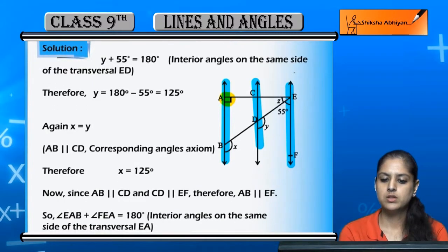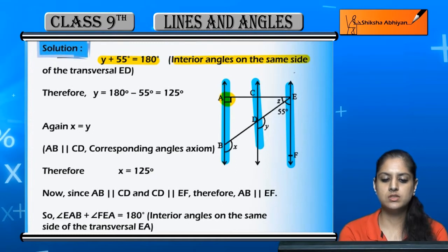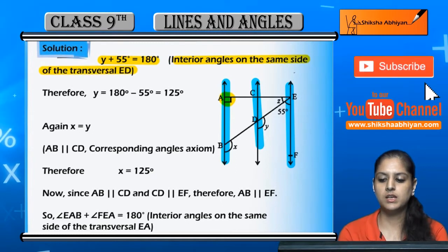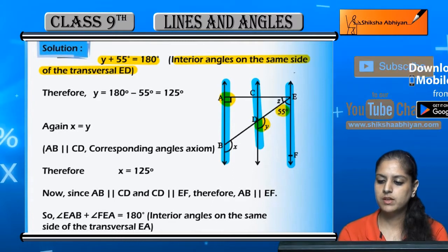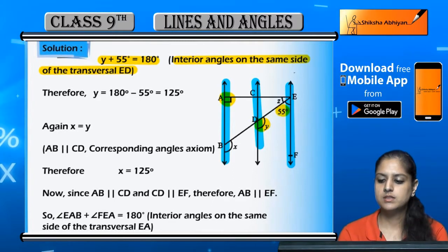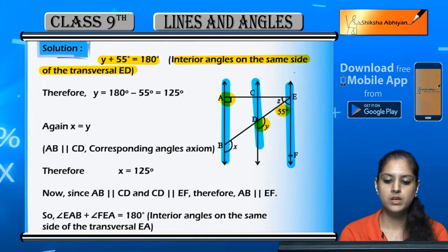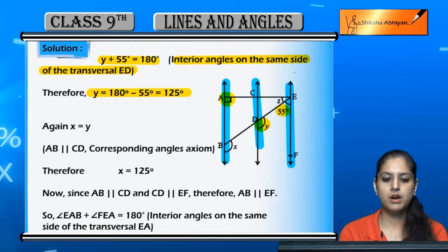So, y plus 55 equals 180 degrees because these are interior angles on the same side of the transversal. ED is the transversal with CD and EF. Therefore, y equals 125 degrees.